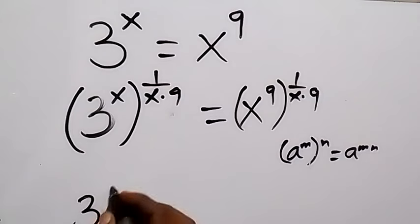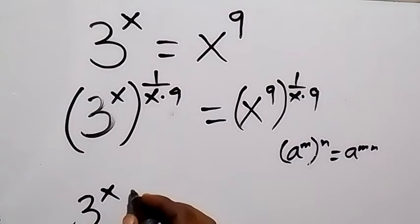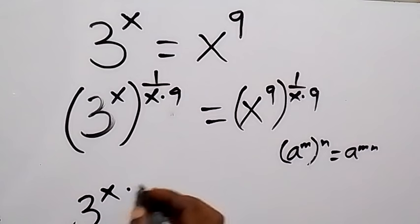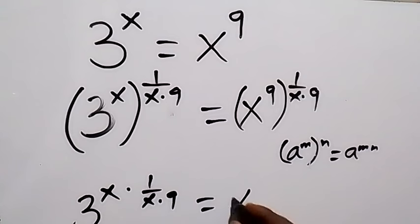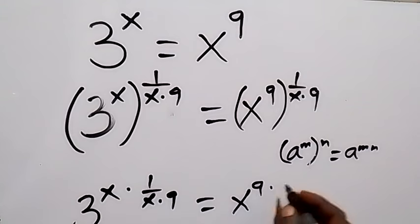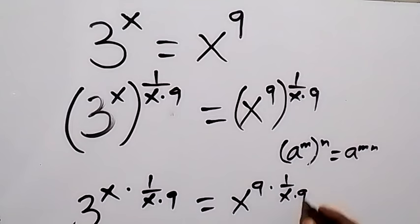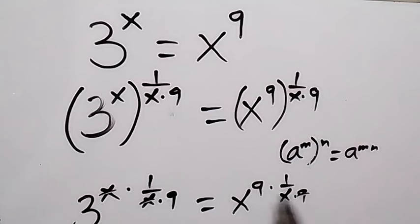3 raised to power x, then multiplied by 1 over x times 9, equals x raised to power 9, then multiplied by 1 over x times 9. Now when x multiplies x, we cancel out, and this remains.